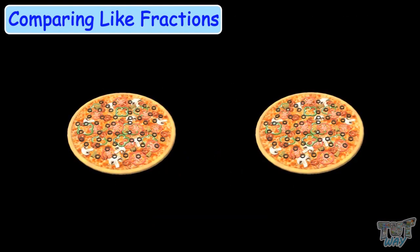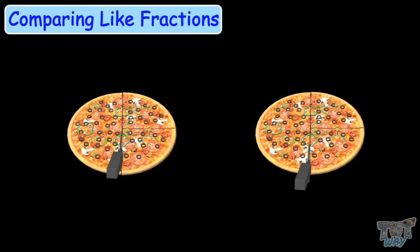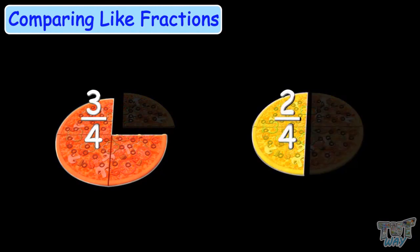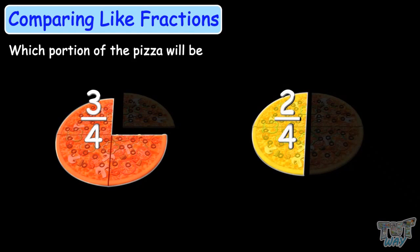Your mom cooks a pizza and cuts the pizza into four equal parts. She can either give you three-fourth pizza or two-fourth pizza. Now in which case will you get more pizza? Here comes a comparison of 3 by 4 and 2 by 4 — we have to compare two portions of a pizza: 3 by 4 pizza or 2 by 4 pizza. Which portion of the pizza will be bigger?